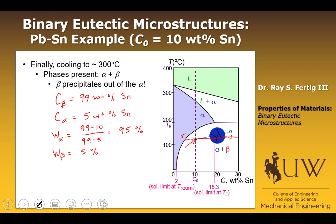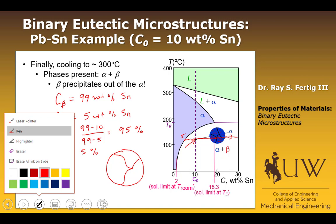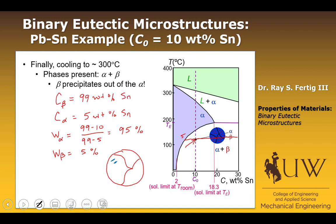So what does that mean for the microstructure? We have large alpha grains, and we precipitate out beta inside those alpha grains — shown here in blue. So we end up with about 5% beta precipitates inside the alpha. This is something to be especially aware of that occurs only with this eutectic type system — we couldn't get that with the binary isomorphous.